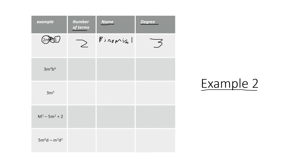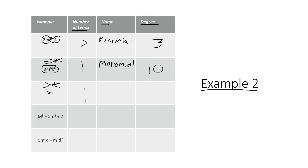Example 2: 3m to the power of 4, b to the power of 6. Nothing is separated by a minus or plus, so this is a single term — 1 term — called a monomial. For the degree, we add all exponents in one term: 4 plus 6 gives us 10. Example 3: 3m to the power of 5 — no minus or plus — so this is also one term, a monomial, with degree 5.